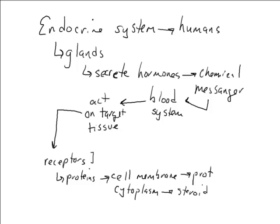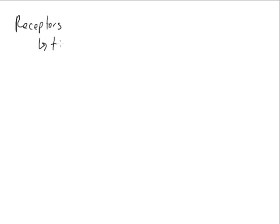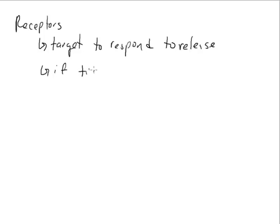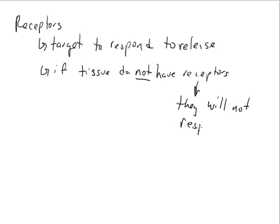What's nice about the endocrine system is that because we have these structures called receptors, it allows the target tissue to respond to the release of the hormone and do what it's supposed to do. Interestingly, if tissues do not have receptors, they will not respond to the hormone. This allows hormones in many cases to have very specific actions — only the tissue that has a receptor for that particular hormone can respond to it.